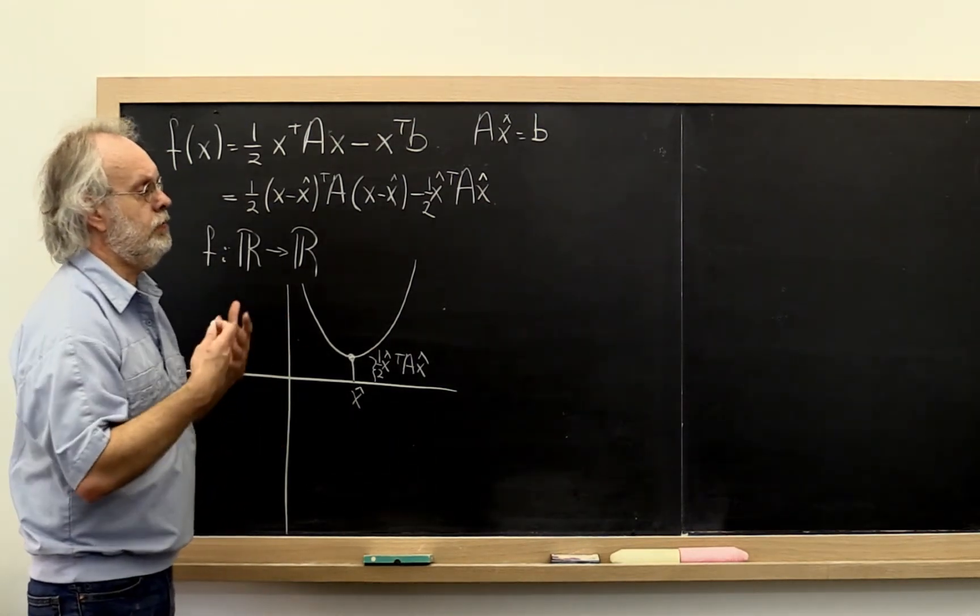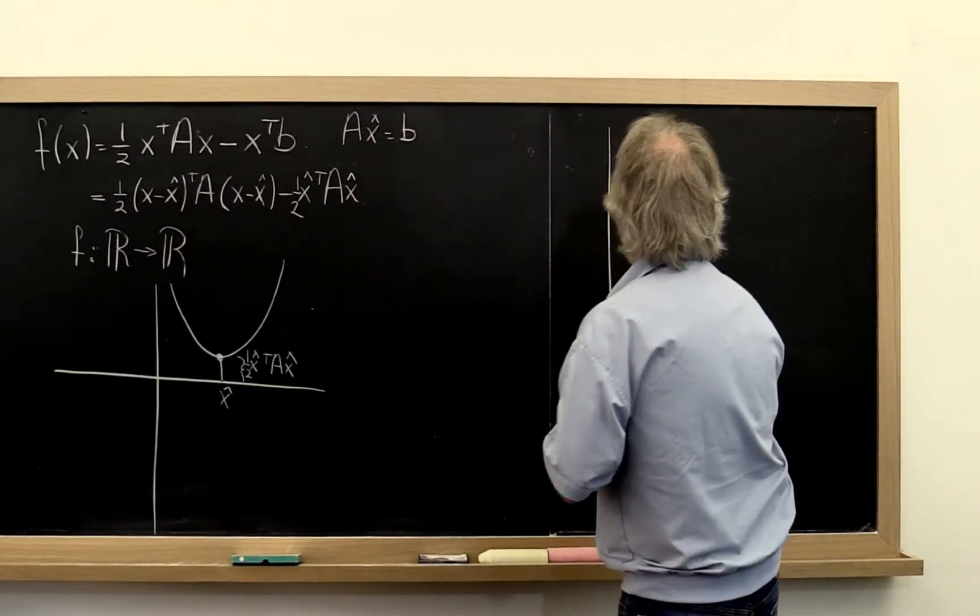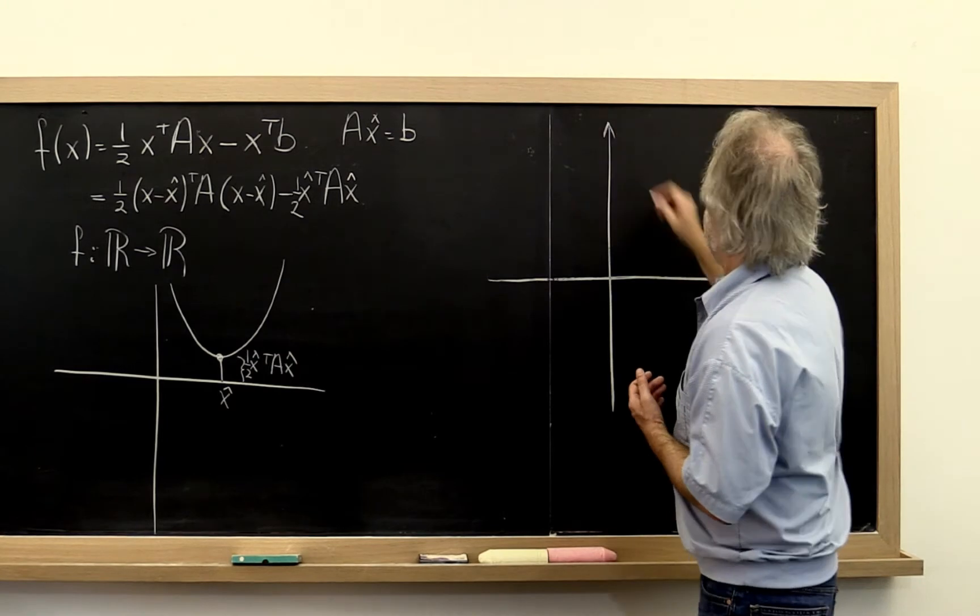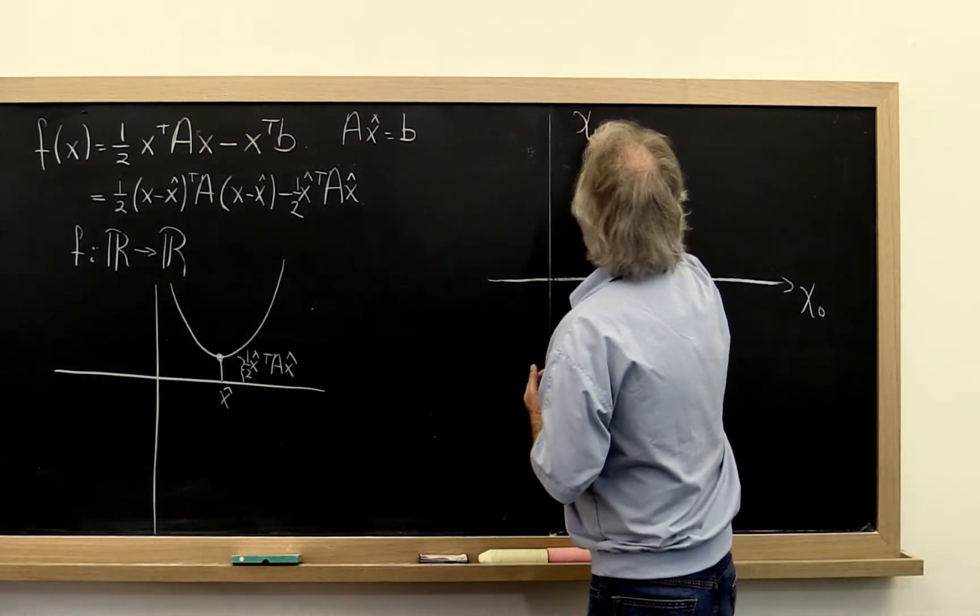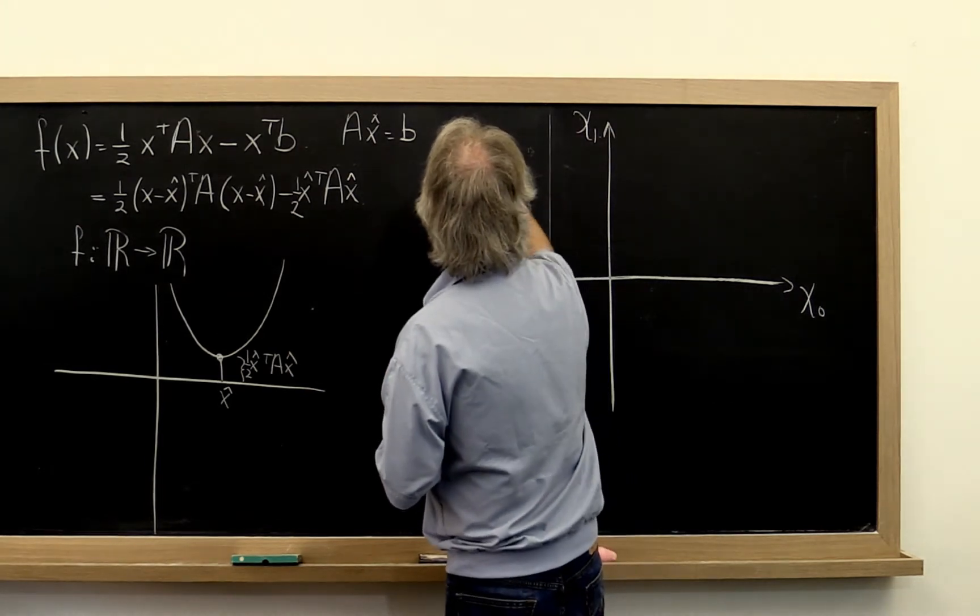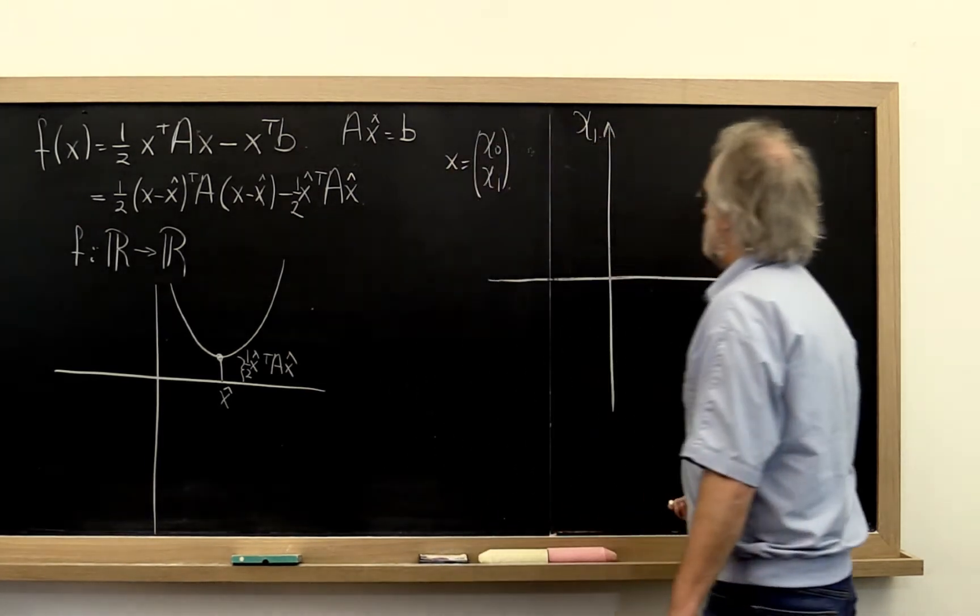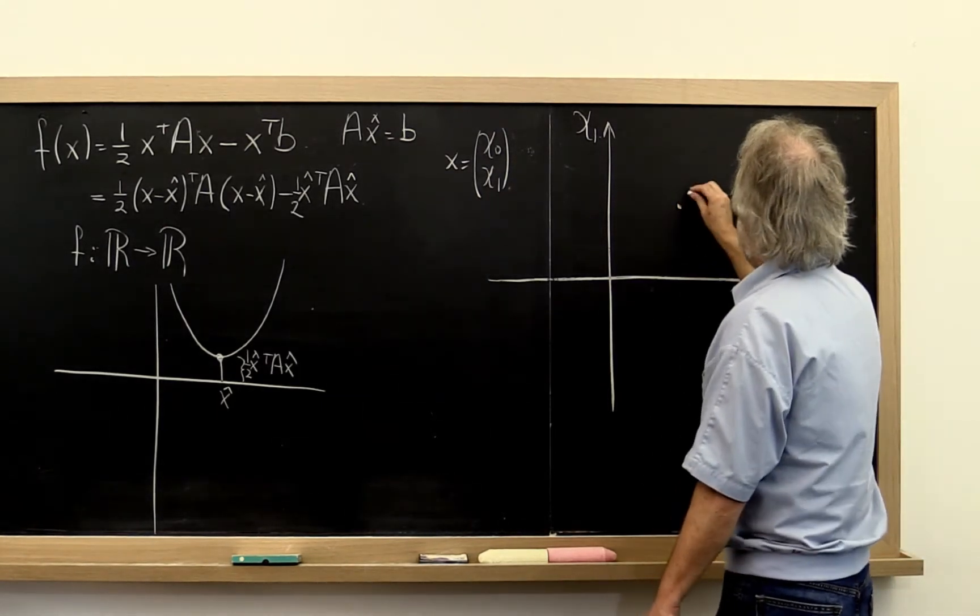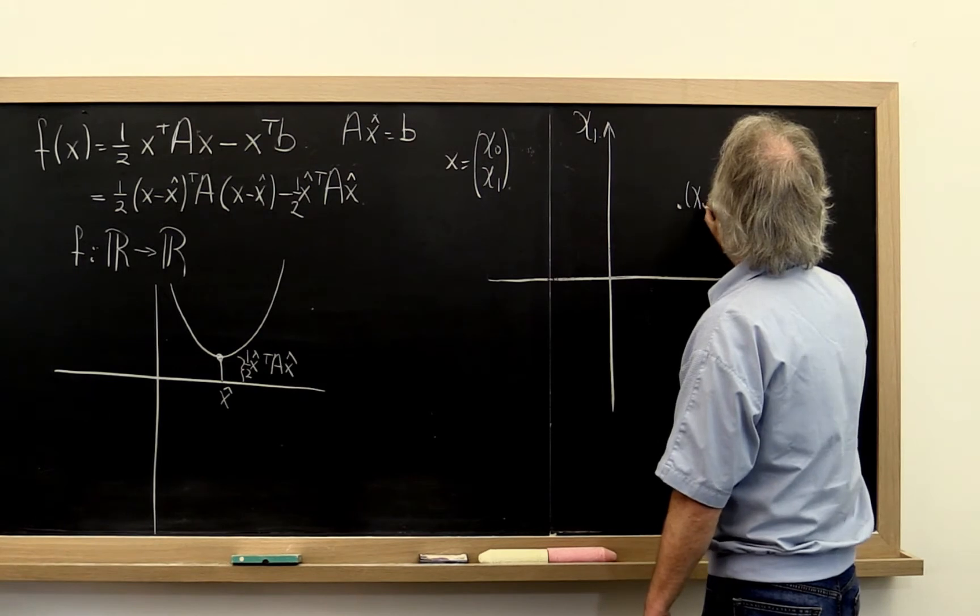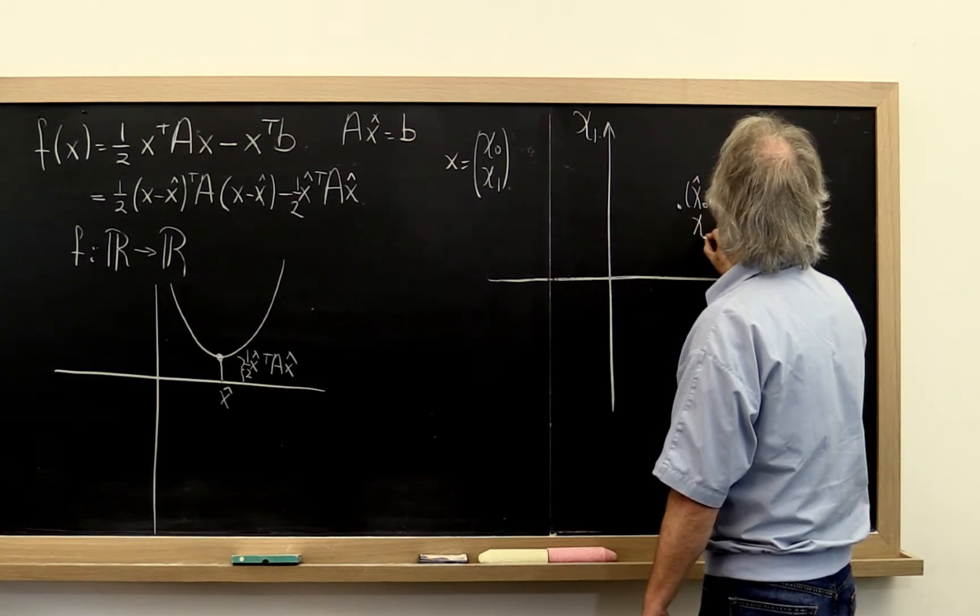One way we can view this in the 2D case is to say, well, here is our chi-0, chi-1 plane because our vector x now consists of chi-0, chi-1. Somewhere in that plane is the point chi-0 hat, well the vector chi-1 hat.